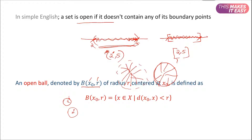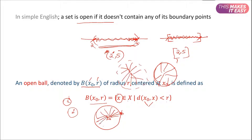The open ball is defined as all the x that are elements of X where the distance between the center x₀ and any x is strictly less than r. So we take a point x₀ here with radius r, and all points whose distance from x₀ is less than r form the open ball.